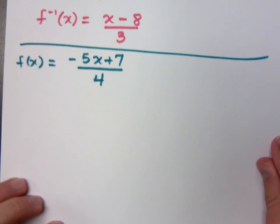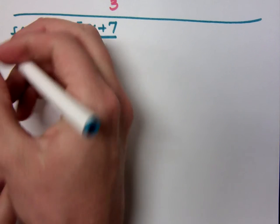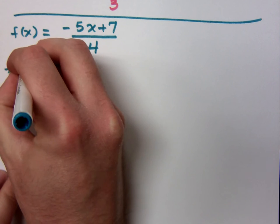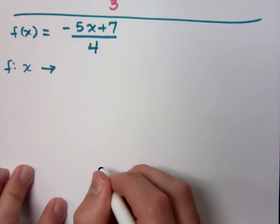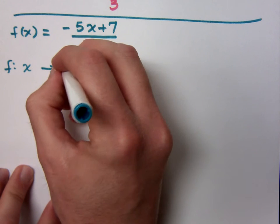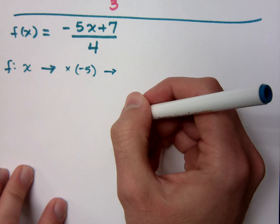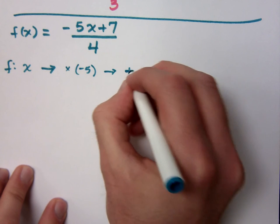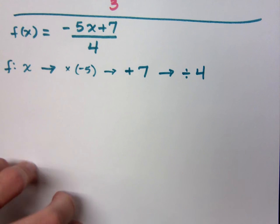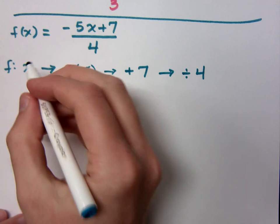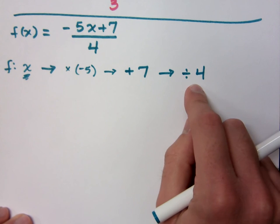So if I look at this guy right here, f of x equals negative 5x plus 7 all divided by 4. This is simple enough that I can identify each step in my order of operations. So I'm starting with x, and what's the first thing that I do once I plug x into this function? I'm multiplying this guy times negative 5. After I multiply it times negative 5, you add 7, and then finally you divide everything by 4. That is what your original function says to do.